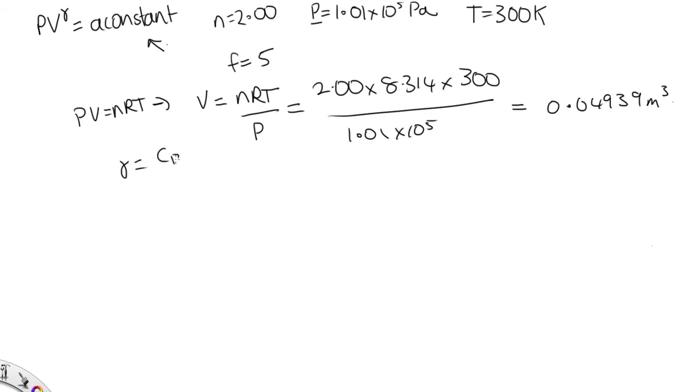Gamma is equal to CP over CV. CP is equal to CV plus R over CV.